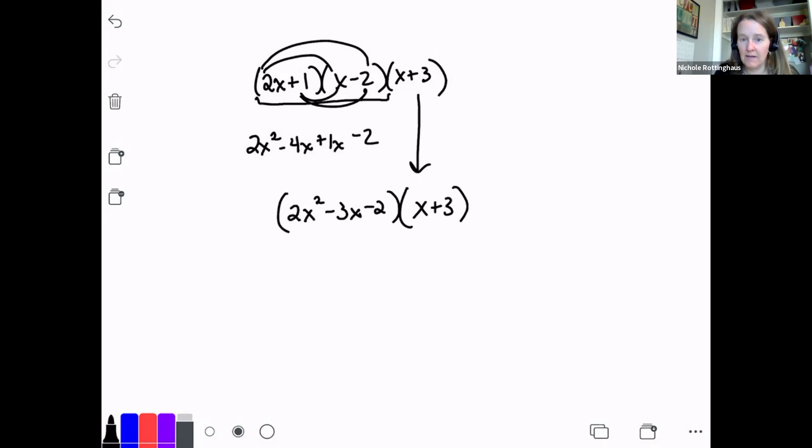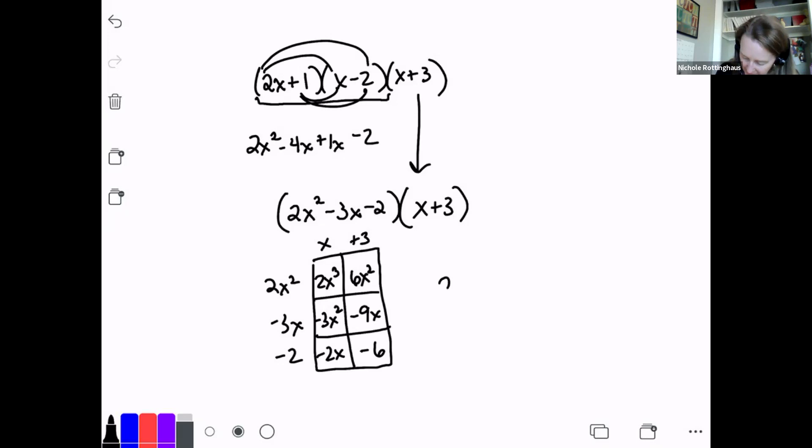Let's do area models on this one. So I've got x plus 3, 2x squared minus 3x minus 2. So 2x to the third, 6x squared minus 3x squared minus 9x minus 2x minus 6. And when I add it all up, I get 2x to the third. And then 6x squared minus 3x squared is 3x squared minus 9x minus 2x is minus 11x minus 6. And that's my answer.